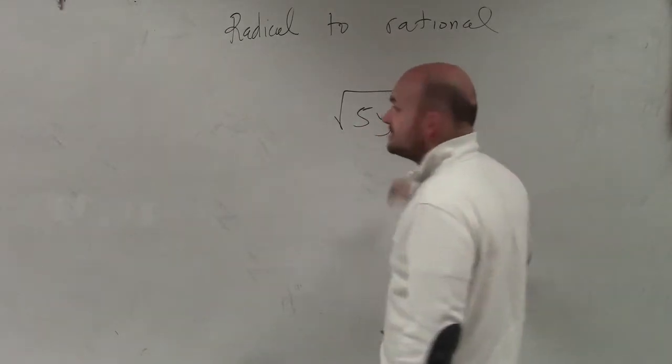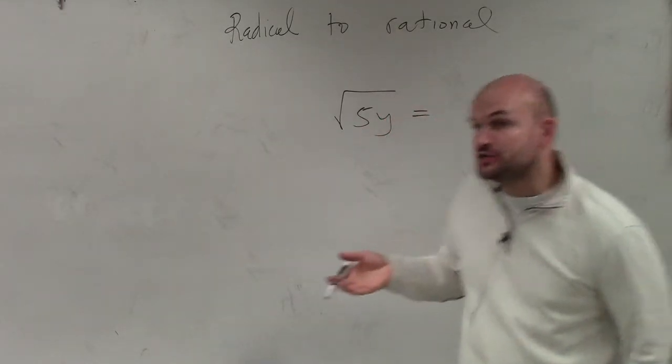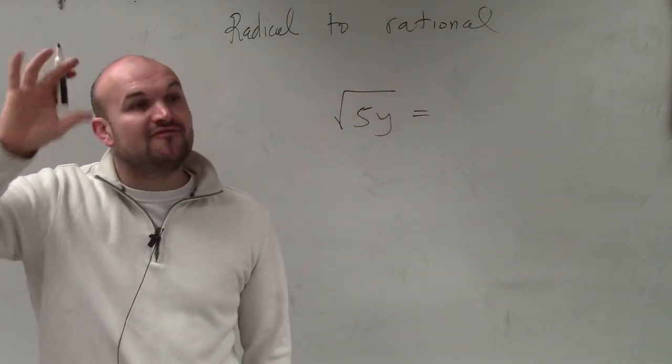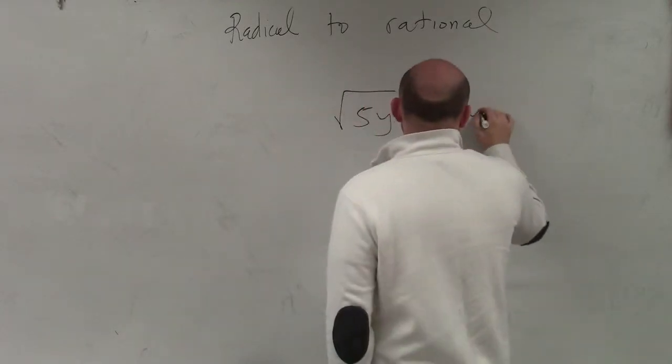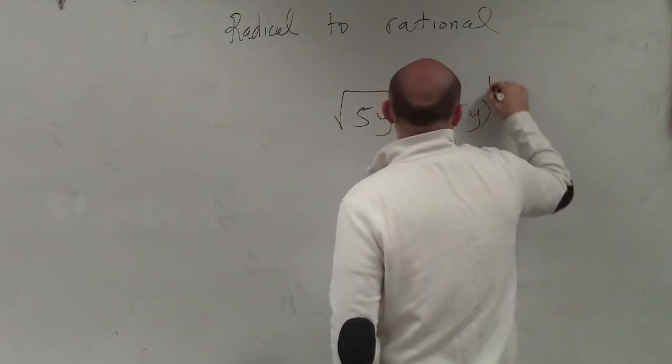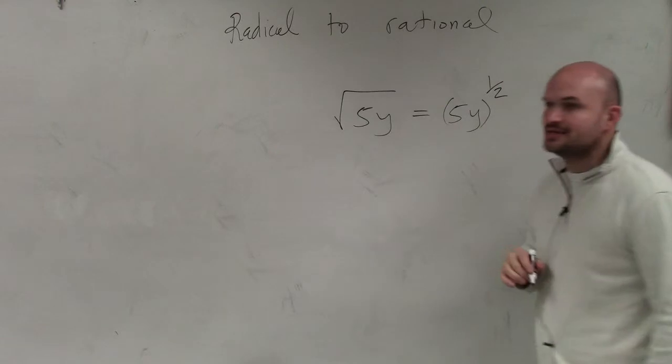So if I'm going to rewrite this as a rational expression, I need to make sure that I'm raising 5 and y to the one-half power. So the way I would write that would be 5y in parentheses raised to the one-half power.